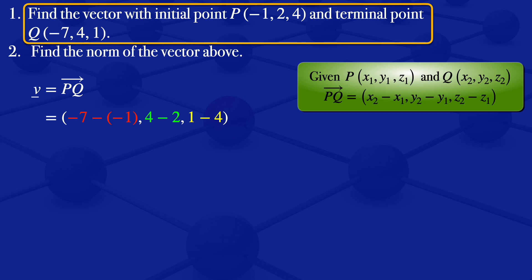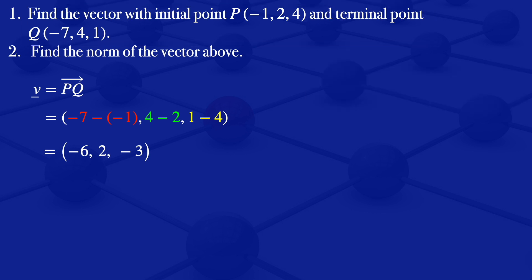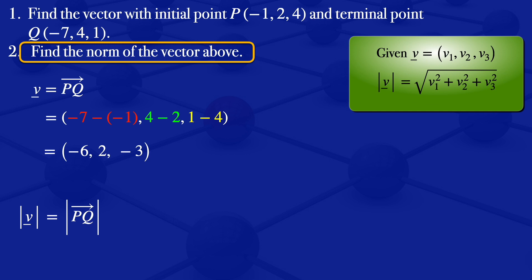I now move on to the next question: finding the norm of the vector we just found. For the norm of a vector, we also call it the length or magnitude. What we are looking for is the norm of the vector v that we've just obtained.